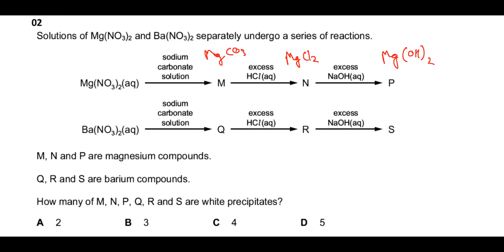Similarly, barium nitrate gives barium carbonate (Q), barium chloride (R), and barium hydroxide (S). So M, N, and P are magnesium compounds, and Q, R, and S are barium compounds. The question asks: how many of M, N, P, Q, R, and S are white precipitates?